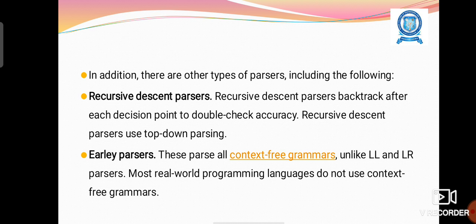In addition, there are other types of parser. Recursive descent parser. These parsers backtrack after each decision point to double-check accuracy. Recursive descent parser use top-down parsing.